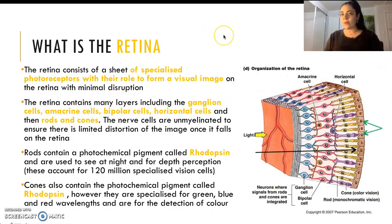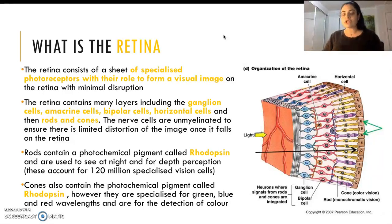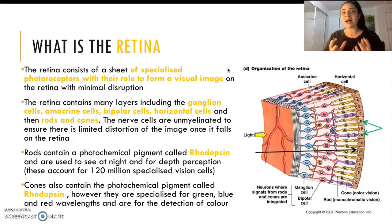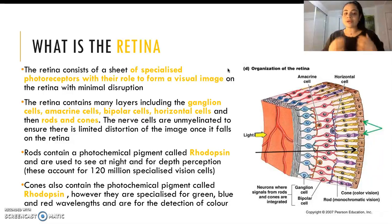Now, understanding how the image gets from the area around us into the eye and to the retina, we need to understand what the retina is. Unfortunately, we don't have time to go through the ganglion cells, the amacrine cells, the bipolar cells and the horizontal cells. But what's really important to note is these cells are unmyelinated — they do not contain myelination. This allows distortion of the image not to occur. If we had myelination, there would be a higher likelihood of our image being distorted as a result of this extra nerve myelination.